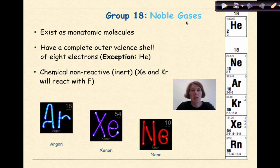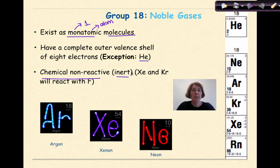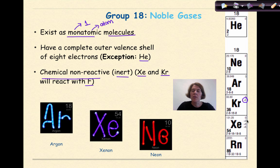Finally, we have Group 18, the noble gases. They exist as monatomic molecules — one atom per molecule. They have a complete outer valence shell of eight electrons, with the exception of helium, which can only hold two electrons in its first shell. They are chemically non-reactive — inert — with the exception of xenon and krypton, which under extreme pressure and temperature will react with fluorine. Krypton has a charge of plus 2, and xenon has other oxidation states associated with it. Otherwise, the elements of this group are pretty non-reactive.